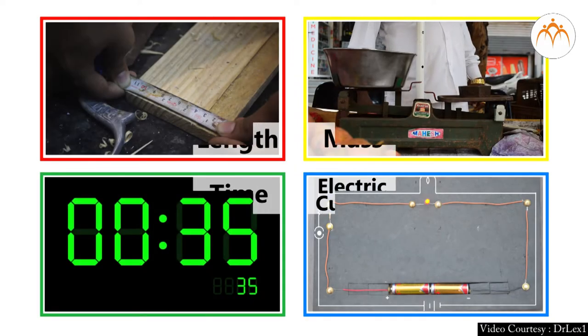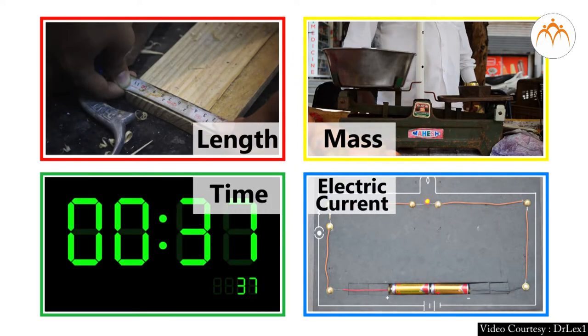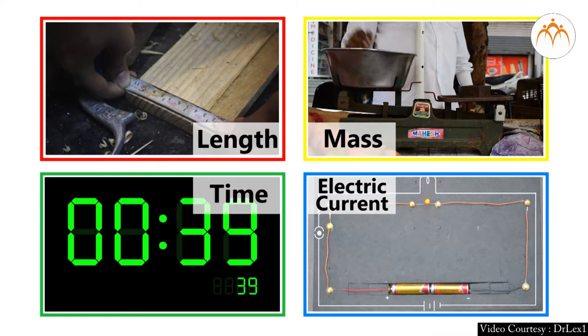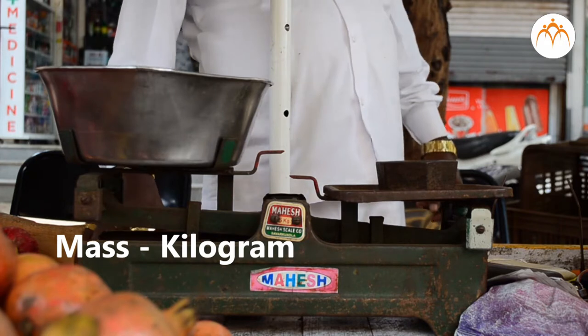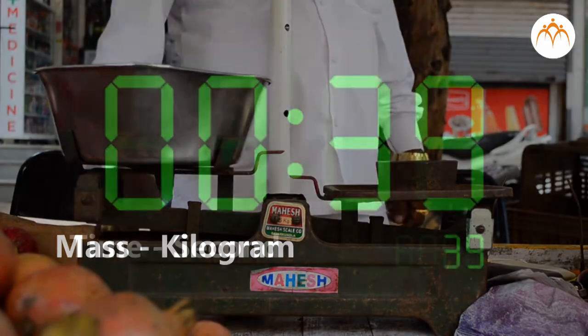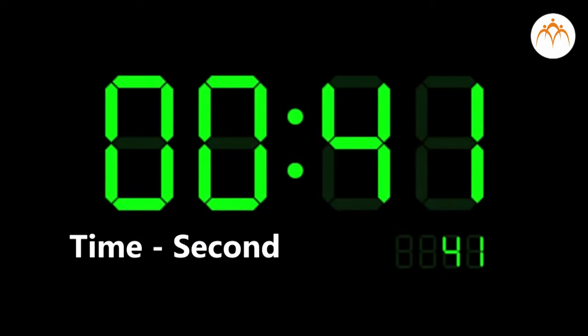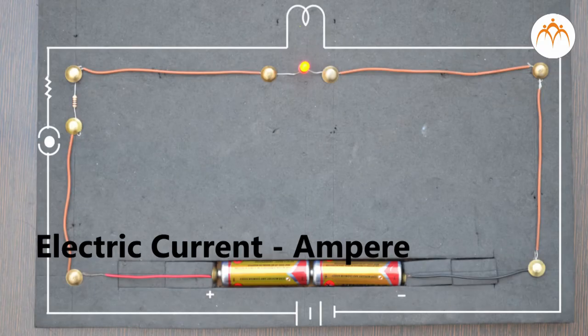Length, mass, time and electric current are the most fundamental physical quantities. Length is measured in meter. Mass is measured in kilograms. Time is measured in second. And electric current in ampere.